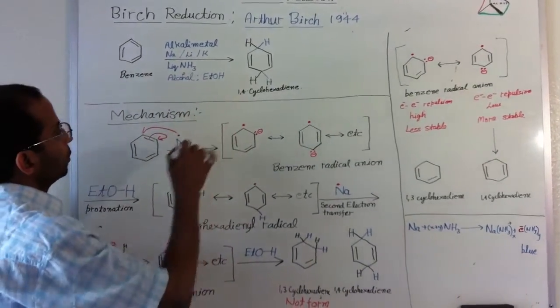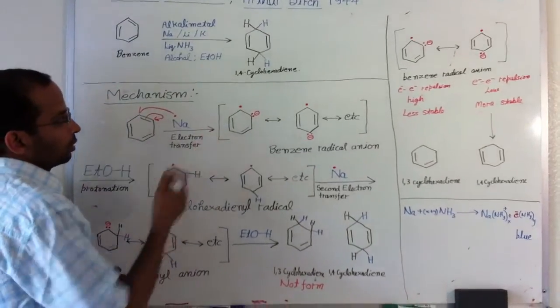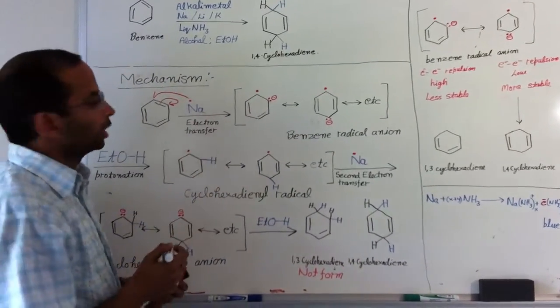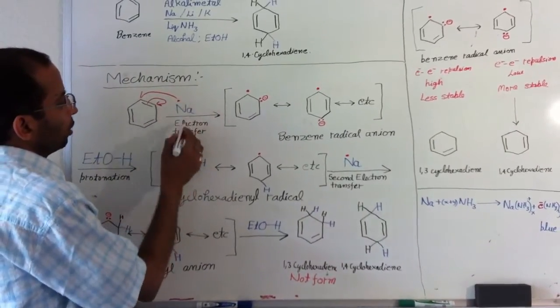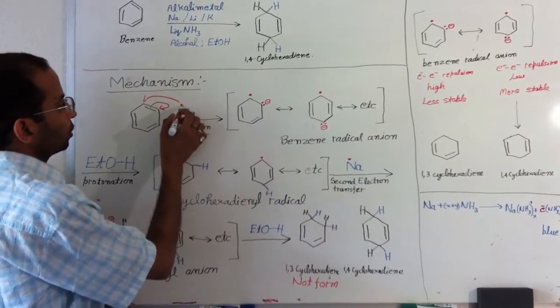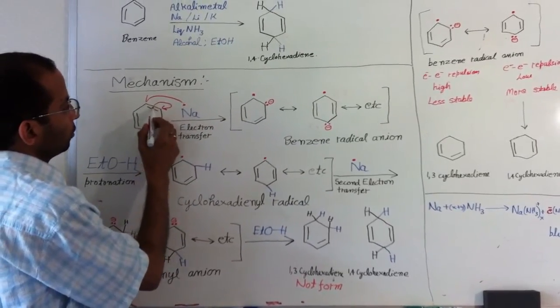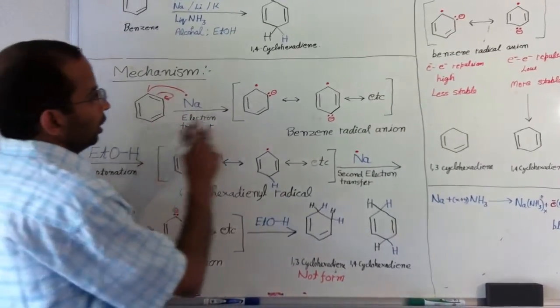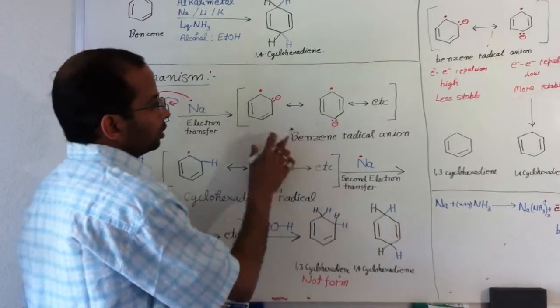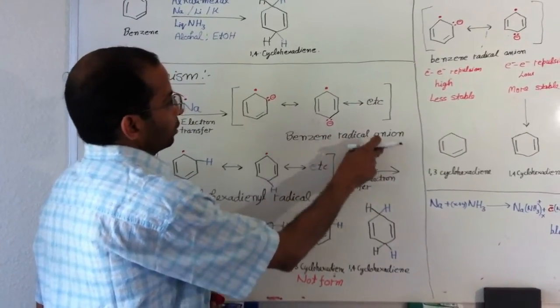Let's discuss the mechanism. According to this mechanism, it goes through an electron transfer mechanism. First, benzene takes an electron transferred from sodium metal to the benzene ring and this bond moves to the neighboring carbon, forming mesomeric resonating structures of benzene radical anions.